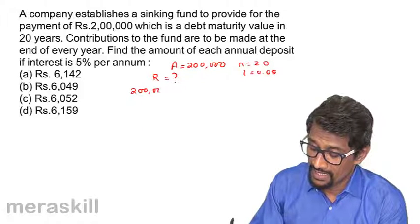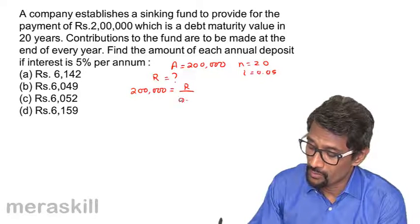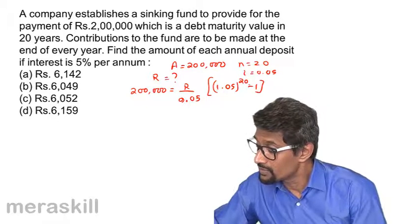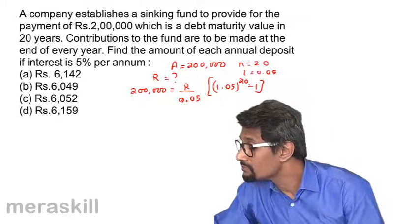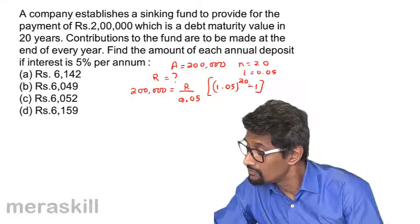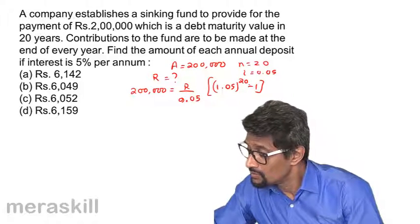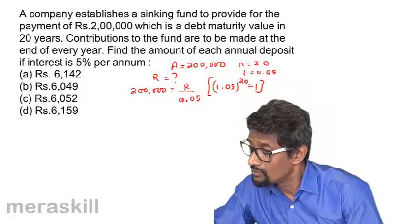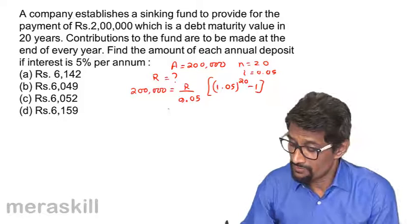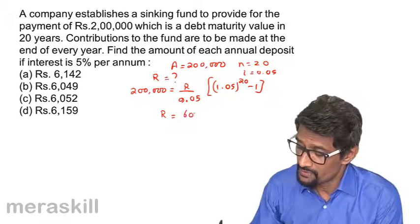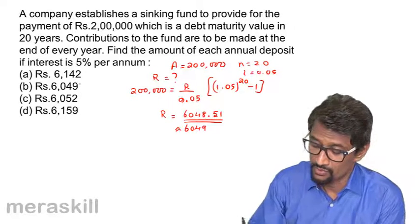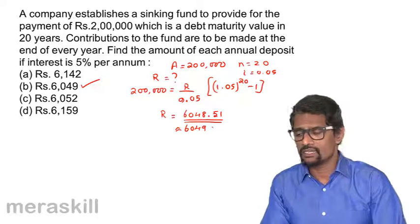Using the future value formula: A = R / 0.05 × (1.05^20 − 1). R turns out to be 6,048 rupees 51, which is roughly 6,049. This is the right answer. You can see that it is just a case of annuity — the question has been slightly tweaked but fundamentally it is the concept of annuity.